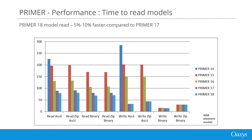Within Primer, being able to both read and write large models quickly is very important as users might be working on multiple models during the same day. This graph shows the performance improvements we have made since version 14 in both reading and writing a large 44 million element model. In version 18 we have further increased the read speed over version 17 by between 5 and 10 percent, with larger models showing the best performance increases.